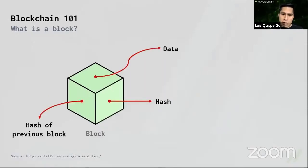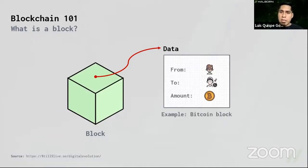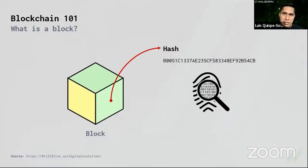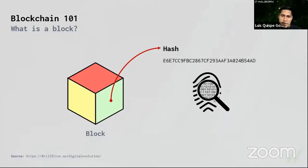So how does it work? Let's look at one block. A block contains data, a hash, and the hash of the previous block. The kind of data depends on the blockchain — for example, in Bitcoin we have information about the sender, the receiver, and the number of coins involved. Each block also has a unique hash, which we can compare to a fingerprint. If you modify even one bit in the block, the hash becomes completely different, allowing us to quickly verify if someone has tampered with the block.